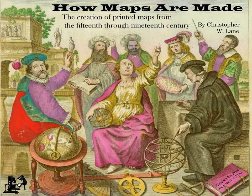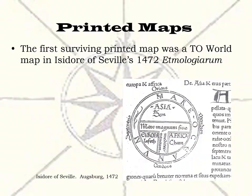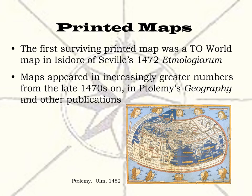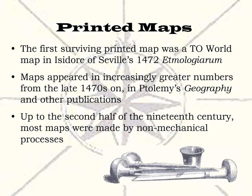How maps are made. This lecture is about how printed maps were made from the 15th through the 19th century. It is an overview about the general trends in map making. The primary source for much of this lecture is David Woodward's excellent reference, Five Centuries of Map Printing. The first surviving printed map was by Isidore of Seville in 1472, shortly after the invention of movable type at mid-century. Printed maps appeared in increasing numbers by the late 1470s, in particular in editions of Ptolemy's Geography from 1477 on.